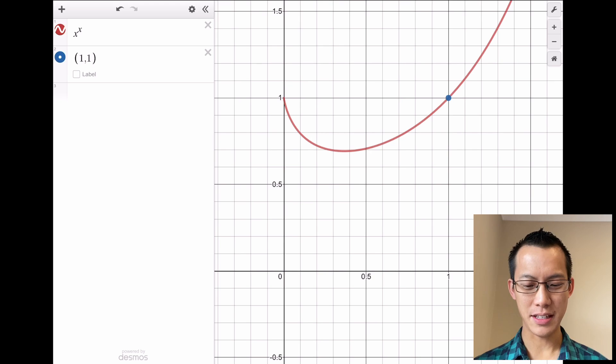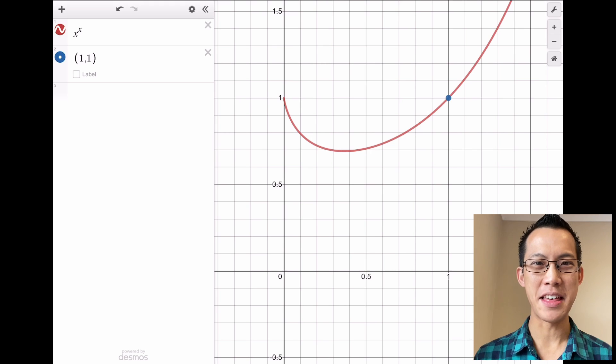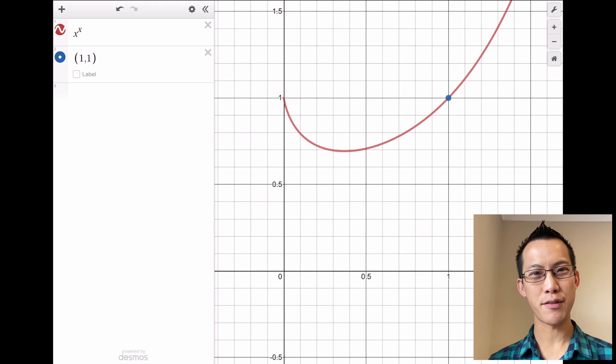I'm interested in two things: number one, why is there a turning point? And number two, where is it? This is often the question that we ask: locate stationary points and determine their nature. So we're going to try and unpack this by using some of our differential calculus.